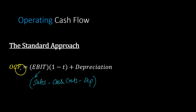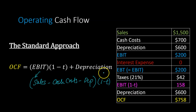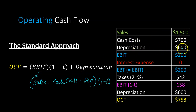When we say operating cash flow is EBIT multiplied by one minus the tax rate, what we're really saying is take all of this, multiply by one minus the tax rate, and then add depreciation. As an example, if you're given sales of $1,500, and cash costs are $700 and depreciation is $600, then EBIT is simply $200, which is $1,500 minus $1,300 in total costs.